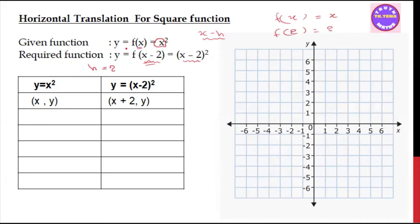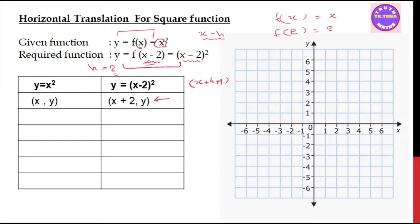My original function refers to y equal to x squared. And this means the transformed function is y equal to x minus 2 whole squared. The mapping rule is x plus h comma y, and since h is 2, it becomes x plus 2 comma y.